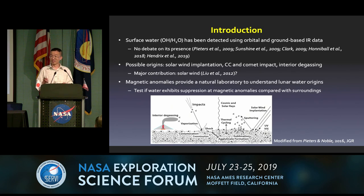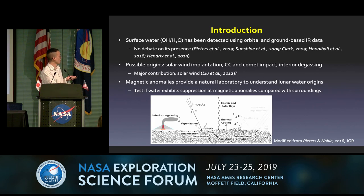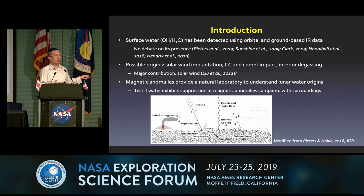I was showing this schematic plot, modified from the Peter and Noble paper, which includes degassing, impacts, and solar wind. The Apollo samples suggest that solar wind may be the major contributor to lunar surface water. As you have a magnetic anomaly on the surface, you can block solar wind implantation, which can suppress the water feature. Compared with the background, you should be able to see the suppression — that's what we are testing in this study.